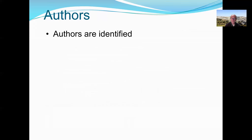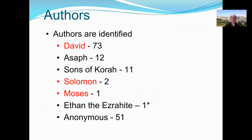The authors are identified in most of the psalms. David is the author of the largest number — 73 psalms, almost half of them. Solomon wrote 2 and Moses wrote 1. These three are highlighted because they are known historical figures, which allows us to put a date on those psalms.